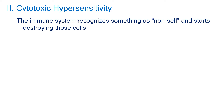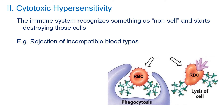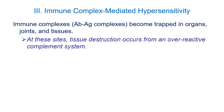Another type of hypersensitivity is cytotoxic hypersensitivity. This is where the immune system recognizes something as non-self and starts destroying the cells. For example, if you receive the wrong blood type in a transfusion, the immune system recognizes the red blood cells as foreign and destroys them by phagocytosis — to a large degree, this can be fatal. Other diseases in this category include hemolytic disease of the newborn and hemolytic anemia.